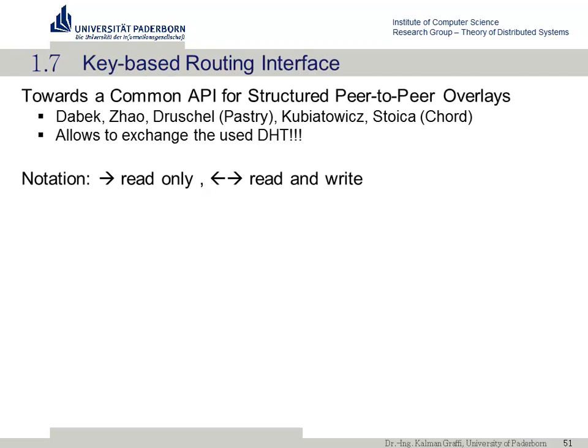The same authors of Pastry also published a paper called 'Towards a Common API for Structured P2P Overlays,' which included the Chord people as well. They tried to create an interface for DHTs that can be reused — one of the very few attempts to standardize peer-to-peer mechanisms. In science, overlays typically come with their own functionality and are difficult to compare or reuse. This API is called the Key-Based Routing interface, allowing you to exchange the DHT implementation while programming against a common interface.